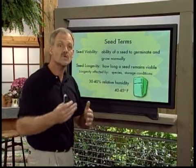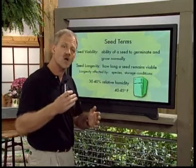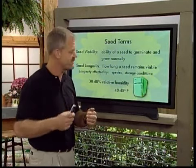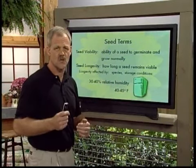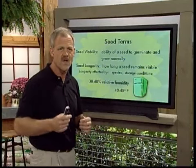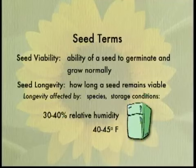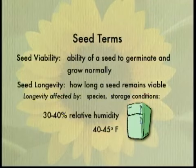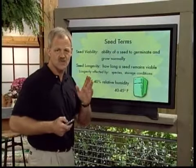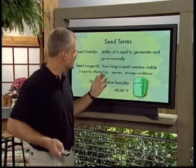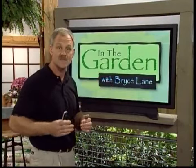Longevity is affected by species. Most vegetable garden plants generally have a longevity of about one to two years, while woody species tend to be three to five years. The other thing that influences longevity is storage conditions. Don't put seeds in the freezer — the optimal storage conditions are 30 to 40% relative humidity and 40 to 45 degrees Fahrenheit. The best place to store your seeds is in the refrigerator.